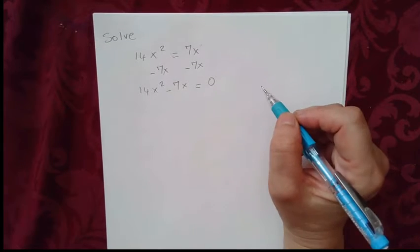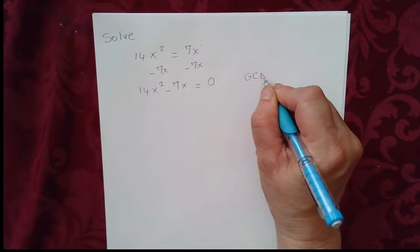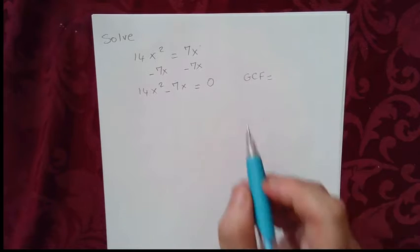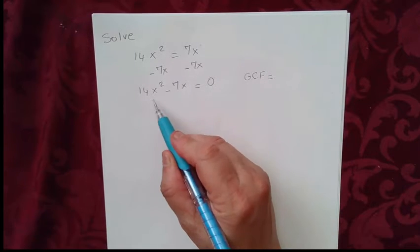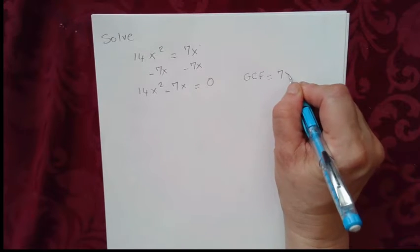So here we have a quadratic equation with no constant term. To solve this quadratic equation we need to factor the greatest common factor or GCF. The greatest common factor of 14x squared and 7x is 7x.